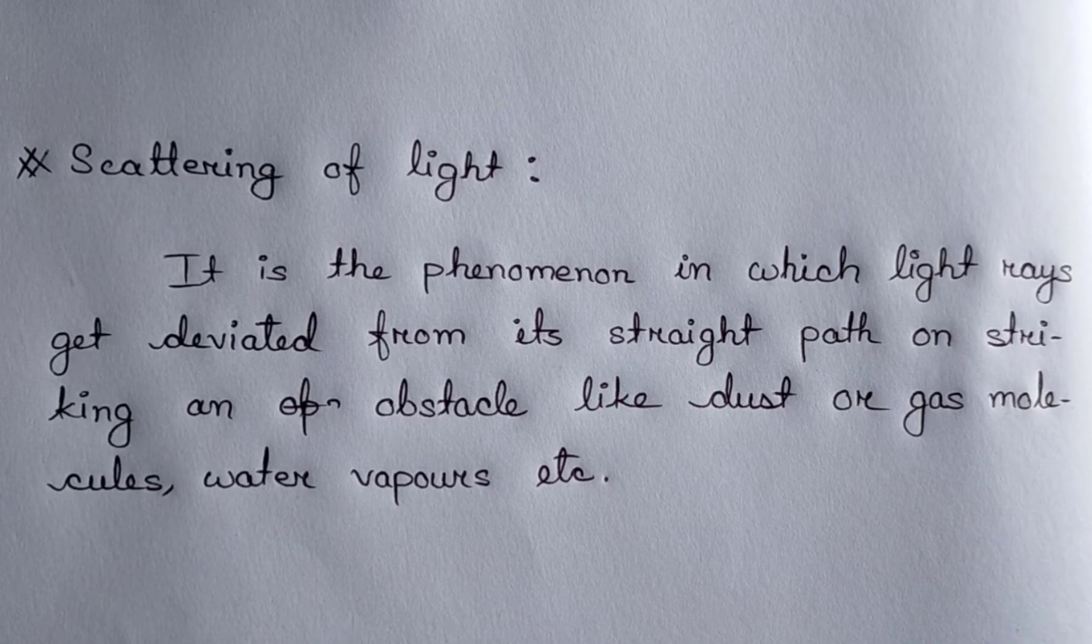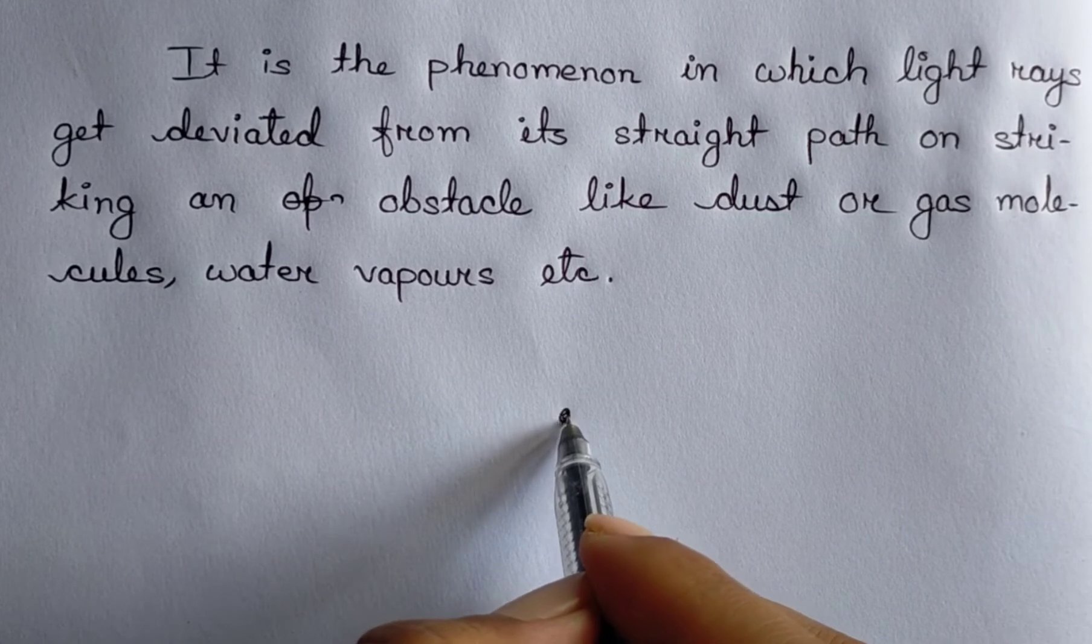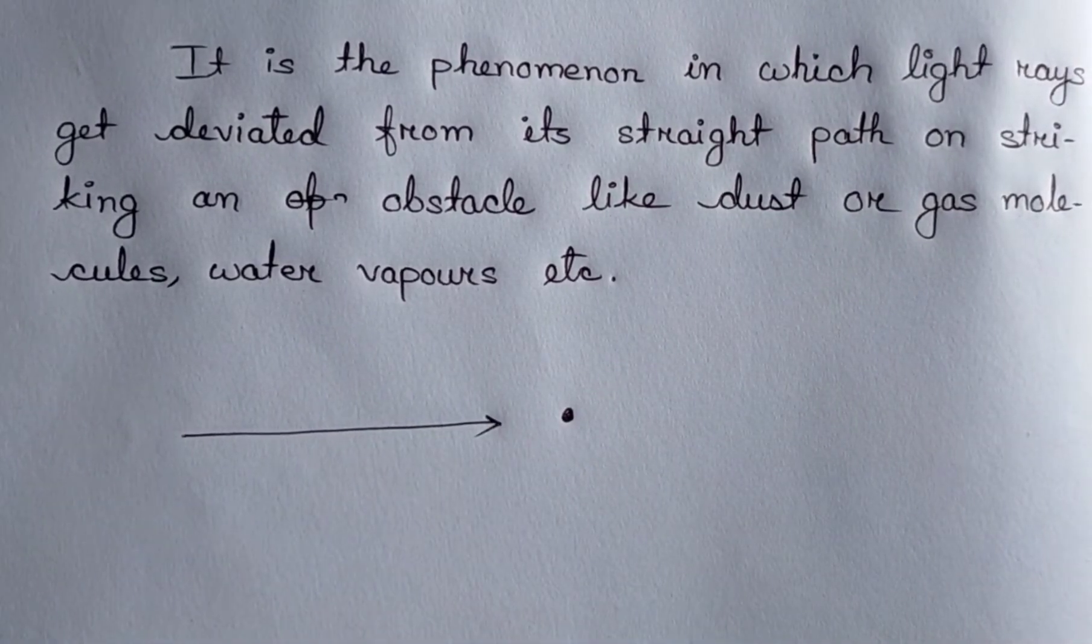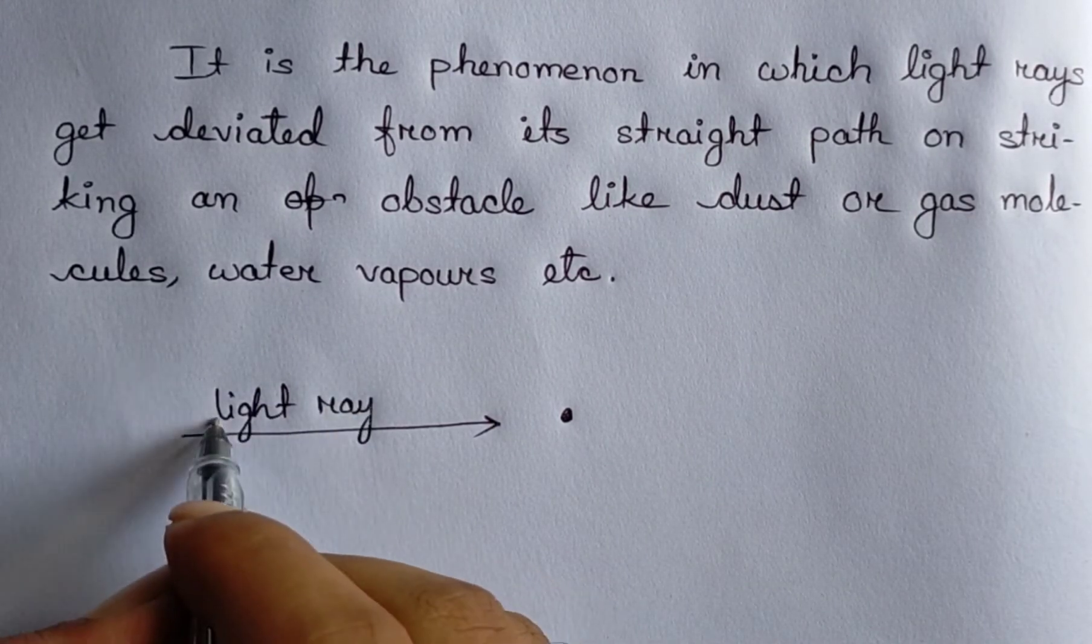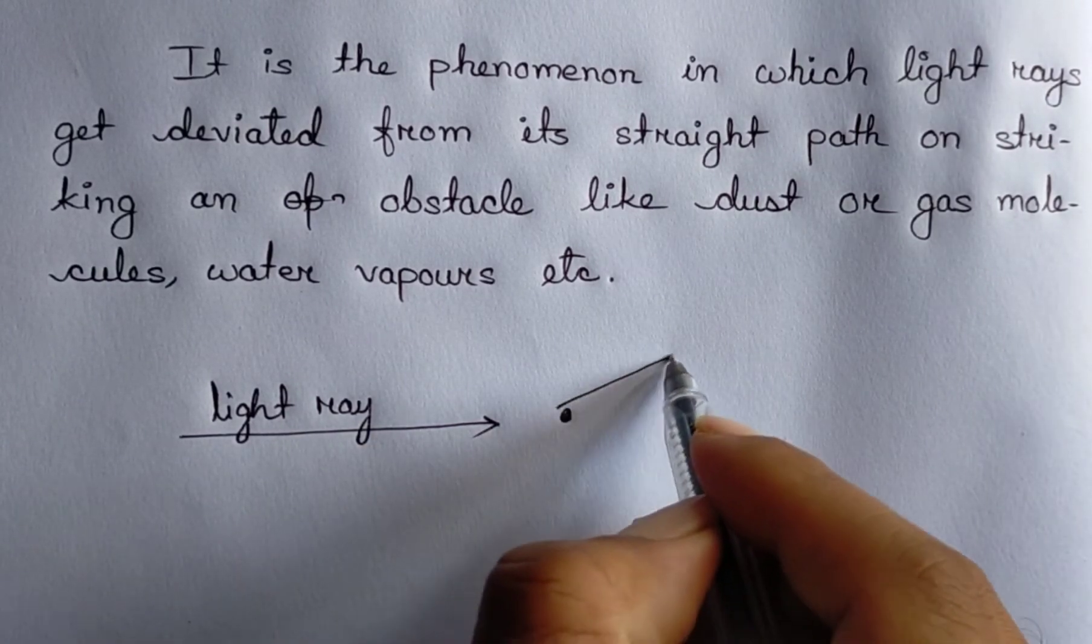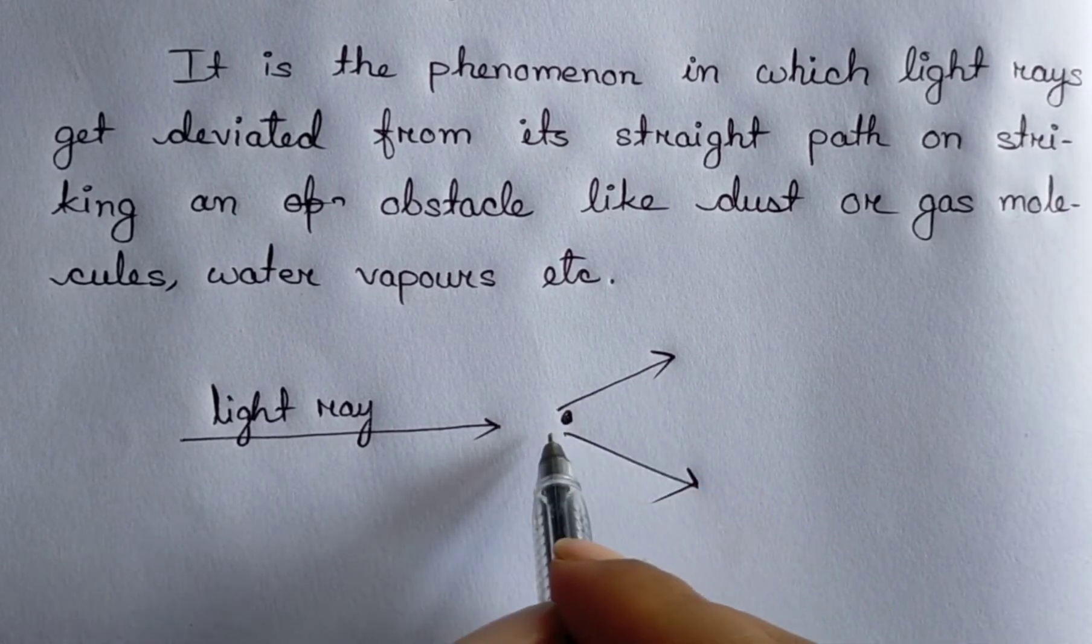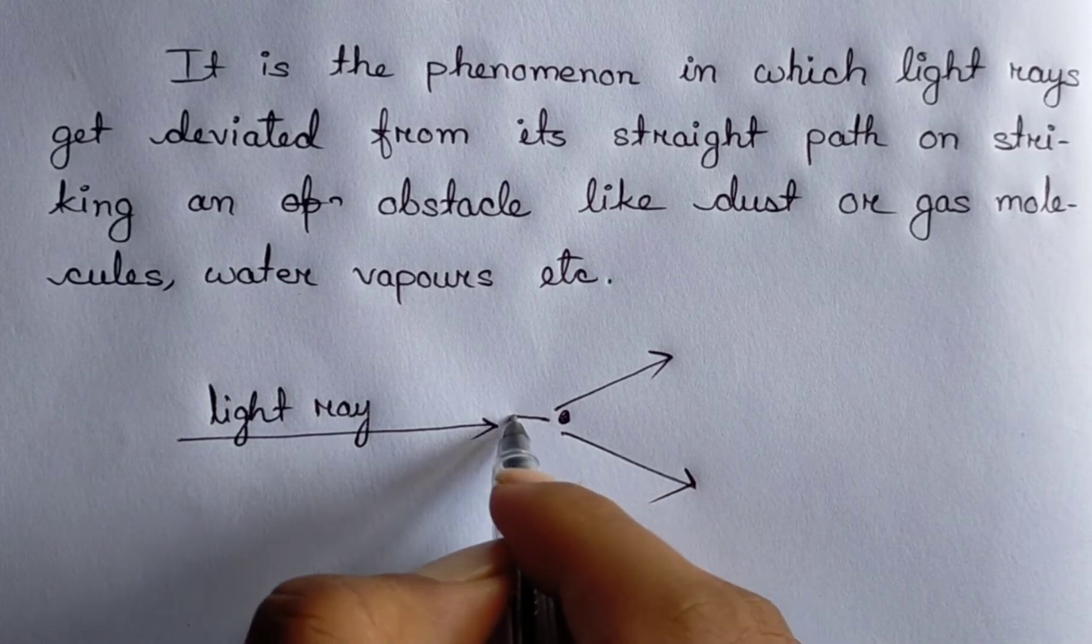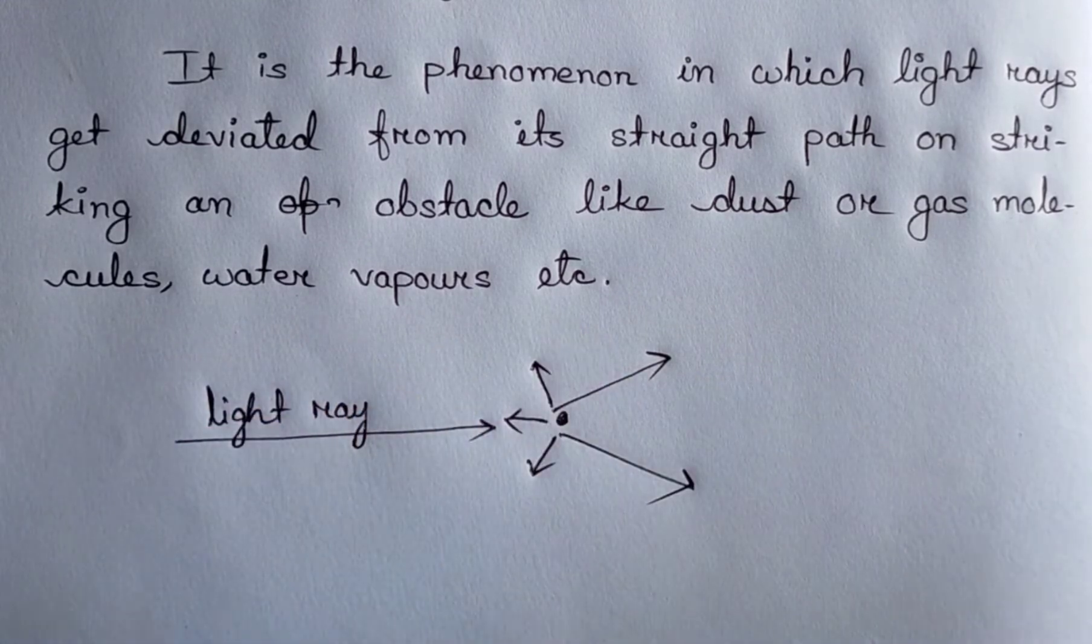Scattering of light - so this particle, the light ray is about to hit it. This is the Earth. The light bounces or reflects in different directions due to the particles.